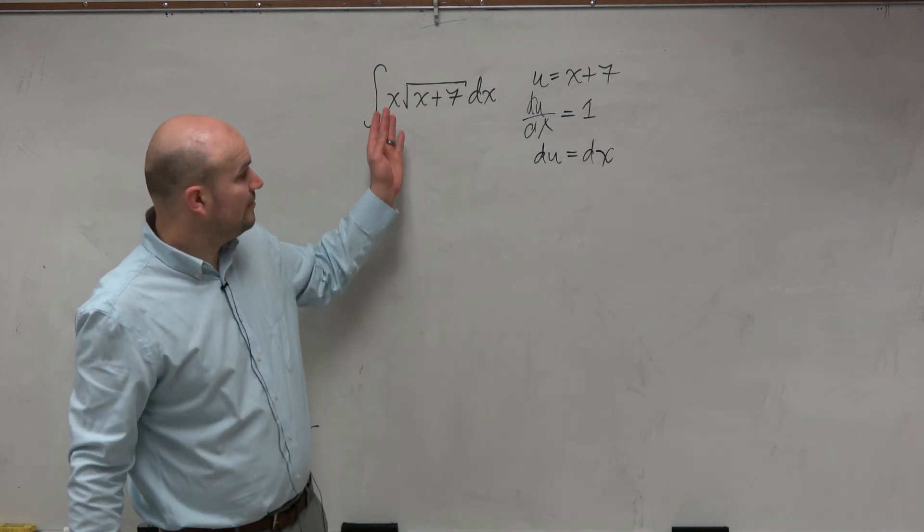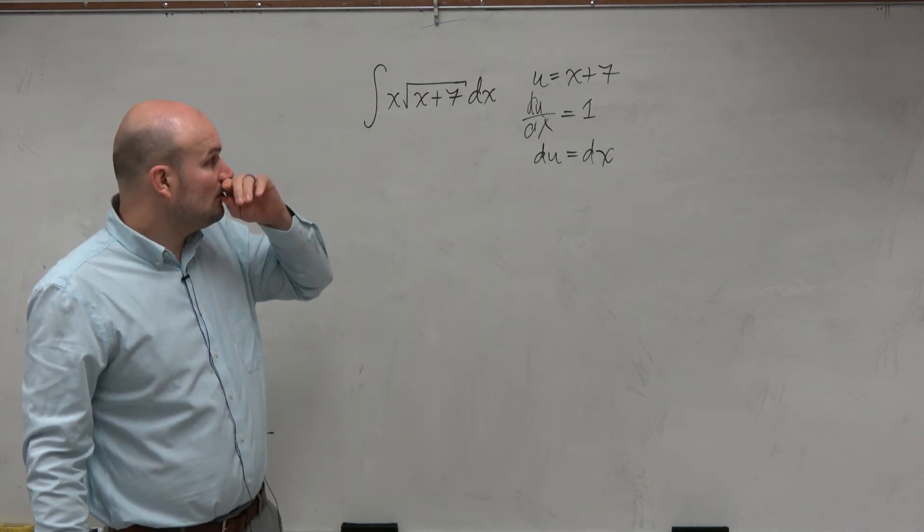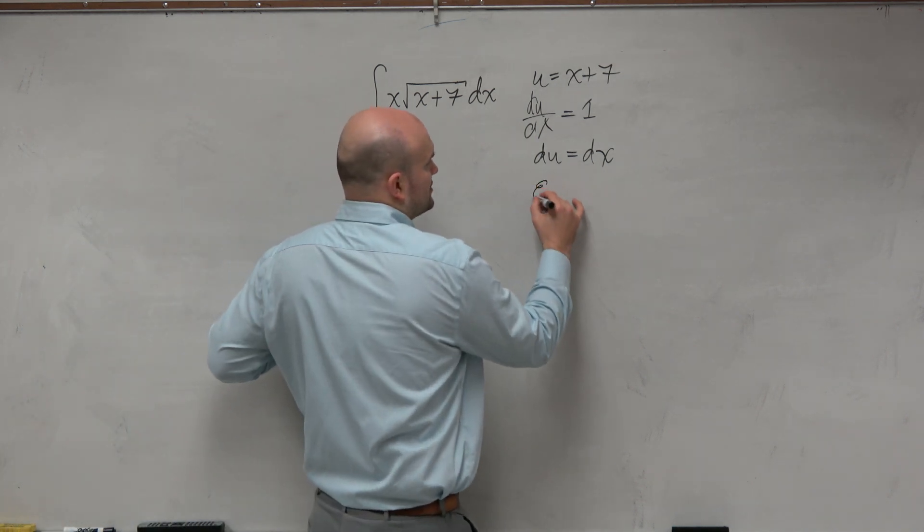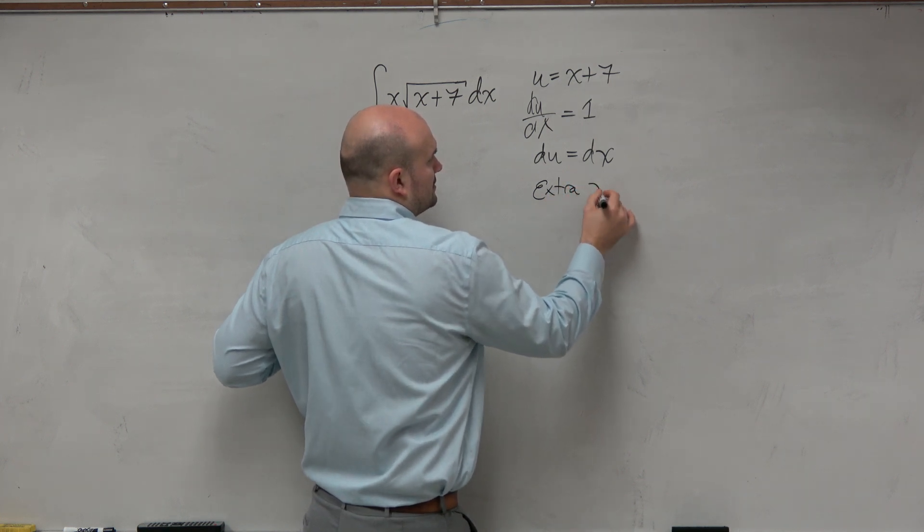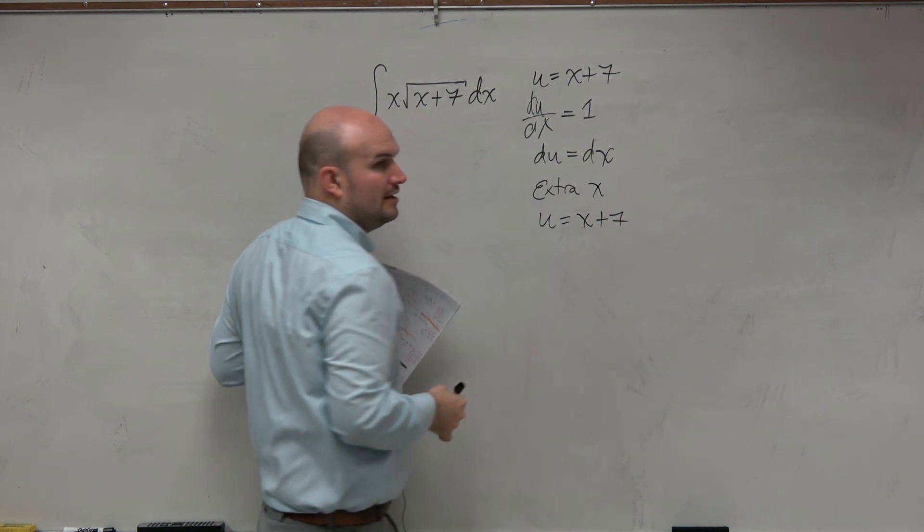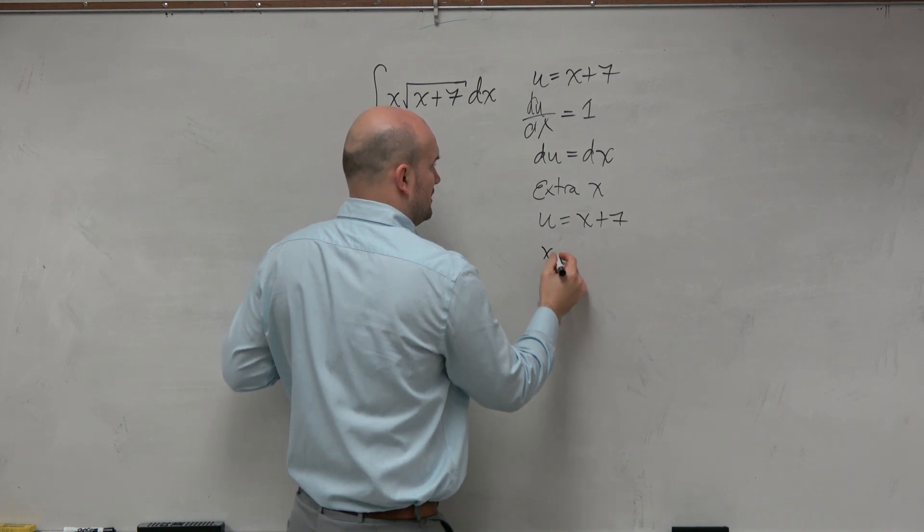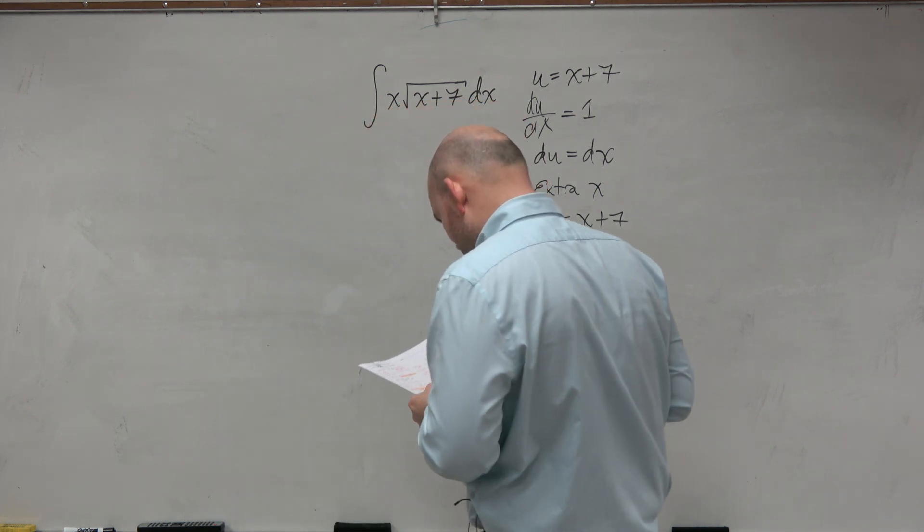But the problem is we have this extra x, correct? So what we can do, though, is when we have an extra x, we can take this function u equals x plus 7, and we can solve for x and say x, then, equals u minus 7.